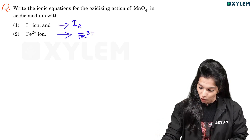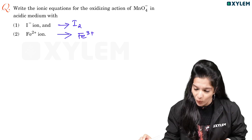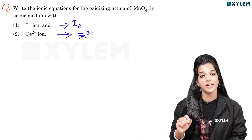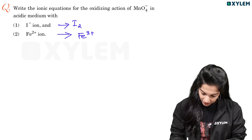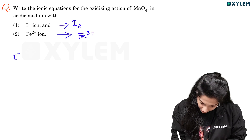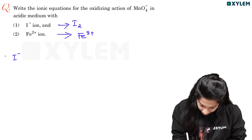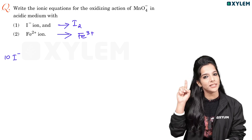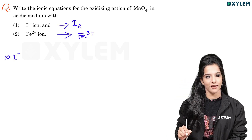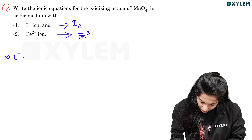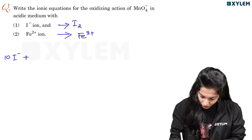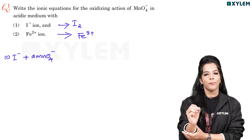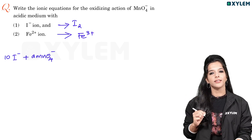How do we write a balanced equation? First, I- — 10 I-. I already learned the trick. Yes, 10 I- and 2 MnO4-.